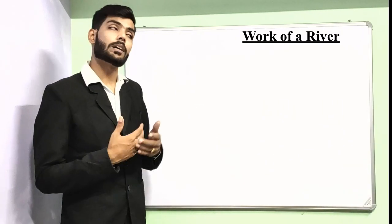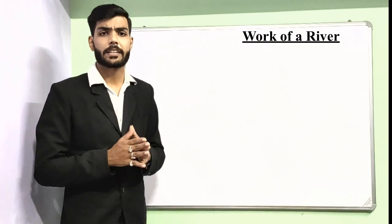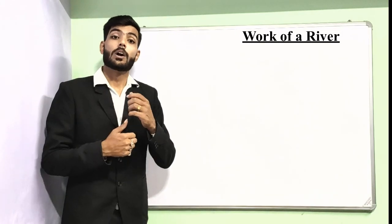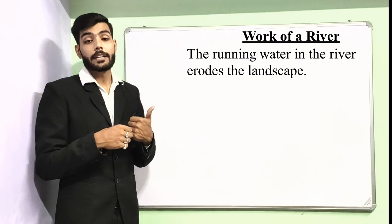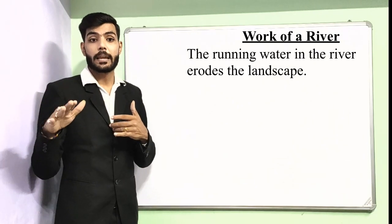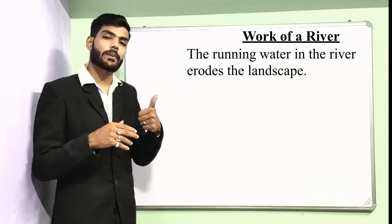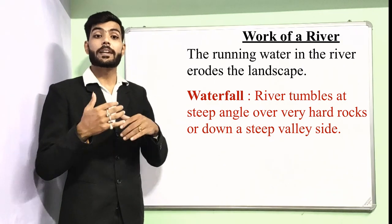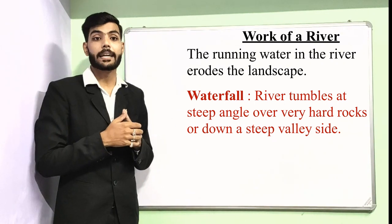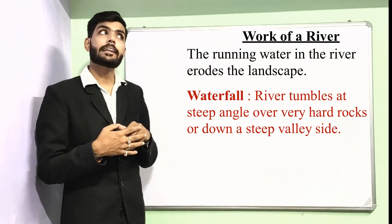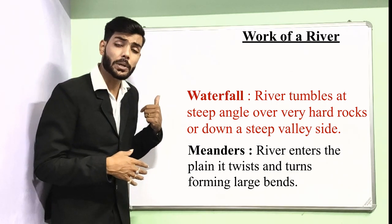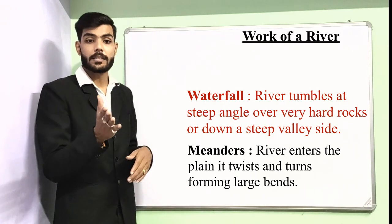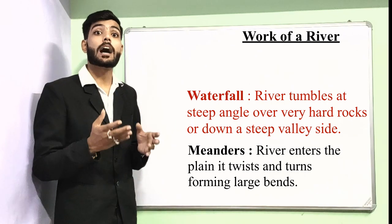We will discuss all these things in detail. The running water in a river erodes away the landscape. The first work of a river is the waterfall: as the river tumbles at a steep angle over very hard rocks or down a steep valley side, it forms a waterfall. Next is the meander — when the river enters the plains, it twists and turns forming large bends known as meanders.